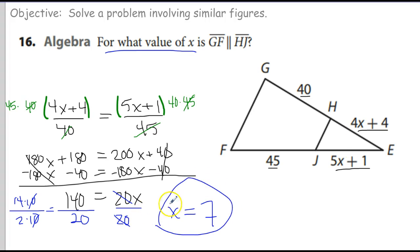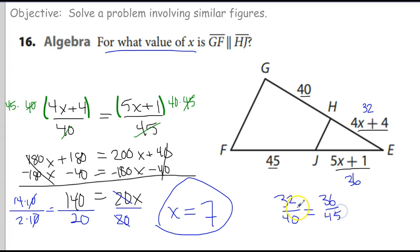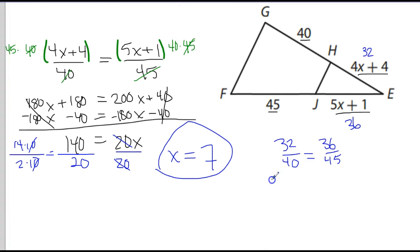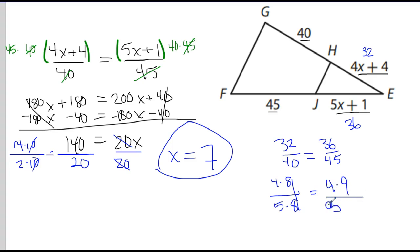That's the final answer — I don't have to plug it in, but to check: 4 times 7 is 28 plus 4 is 32, and 5 times 7 is 35 plus 1 is 36. So the claim is 32 over 40 equals 36 over 45. For 32 over 40: 8 is common, giving 4 times 8 over 5 times 8 — the 8s cancel, giving 4 fifths. For 36 over 45: 9 is common, giving 4 times 9 over 5 times 9 — the 9s cancel, also giving 4 fifths. So 4 fifths equals 4 fifths. Verified.